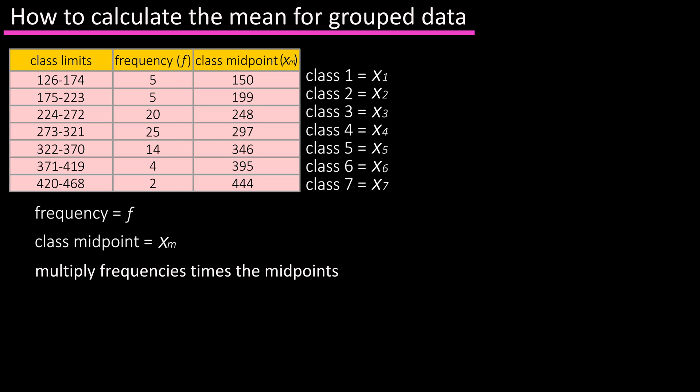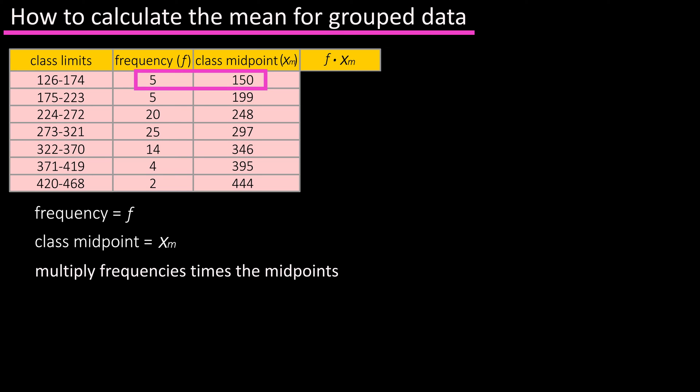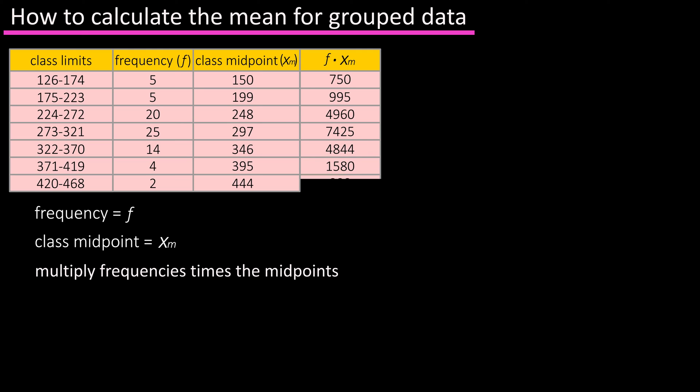The next thing that we're going to do is multiply the frequencies for each class times the midpoints for each class, and we'll create a new column in our table for that. So for class one we have a frequency of 5, and multiply that by the midpoint of 150, and we get 750. For class two we have a frequency of 5, and a midpoint of 199, and multiplying those gives us 995, and we continue this for the five remaining classes as you see in the table.